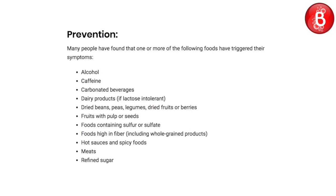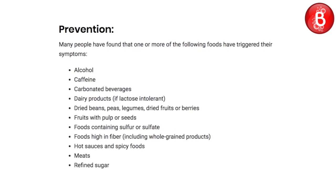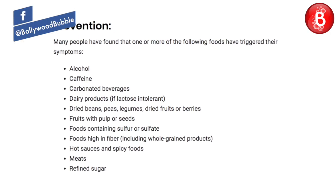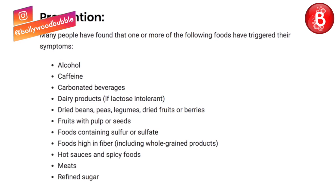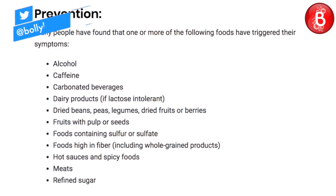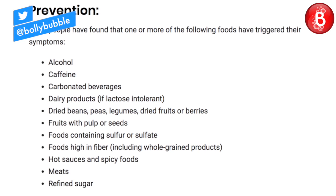Prevention. Many people have found that one or more of the following foods have triggered their symptoms: alcohol, caffeine, carbonated beverages, dairy products if lactose intolerant, dried beans, peas, legumes, dried fruits, fruits or berries, fruits with pulp or seeds, foods containing sulfur or sulfate, foods high in fiber including whole grain products, hot sauces and spicy foods, meats and refined sugar.